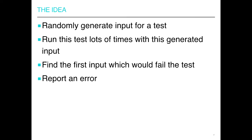The idea of property-based testing is quite simple. You get an input for your test — it's randomly generated input. You run your test multiple times with this randomly generated input. You find the first input which makes your test fail, and then you report an error. If you couldn't find a randomly generated input which makes your test fail, it means your test passed. That's the whole idea.